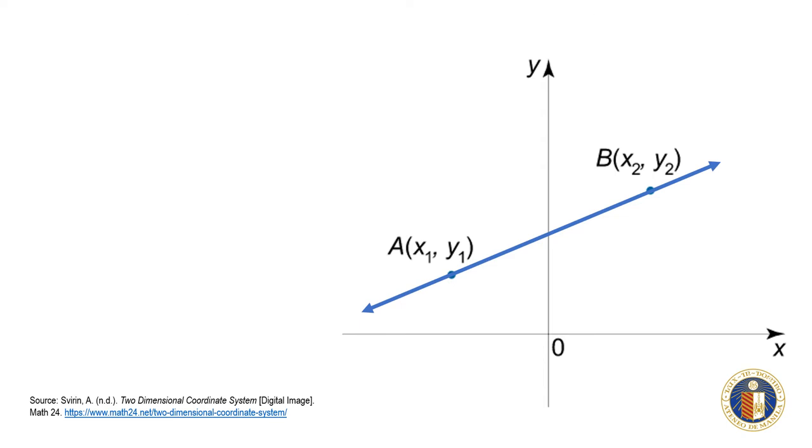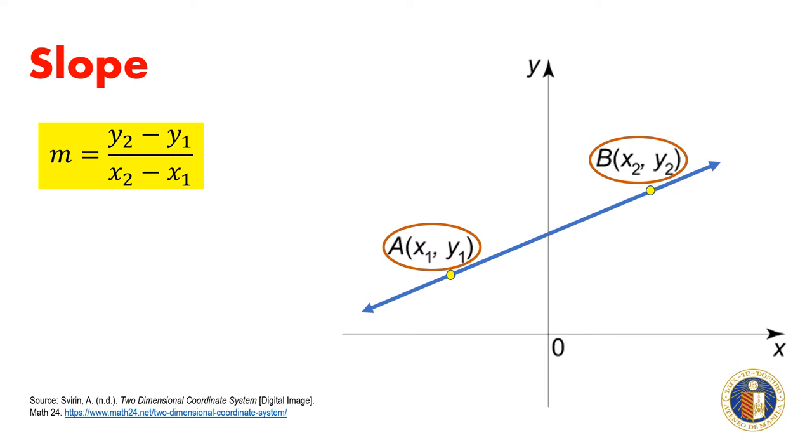Given any two points A and B on a line with coordinates (x₁, y₁) and (x₂, y₂) respectively, the slope of the line is given by the formula m = (y₂ - y₁) / (x₂ - x₁).